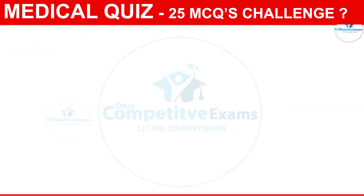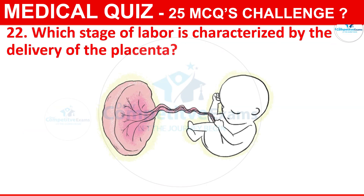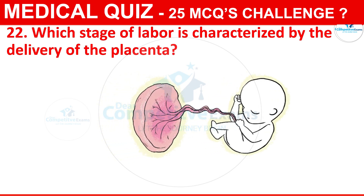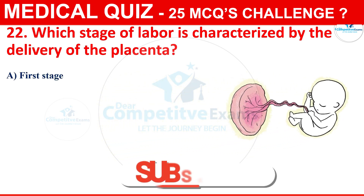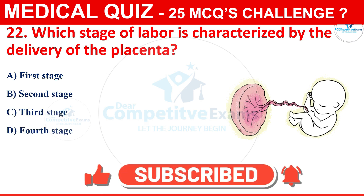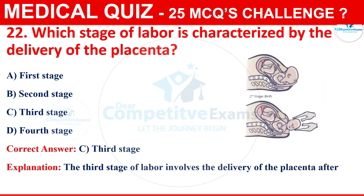Question 22: Which stage of labour is characterized by the delivery of the placenta? The options are First Stage, Second Stage, Third Stage, or Fourth Stage. The correct answer is C, that is Third Stage. The third stage of labour involves the delivery of the placenta after the birth of the baby.